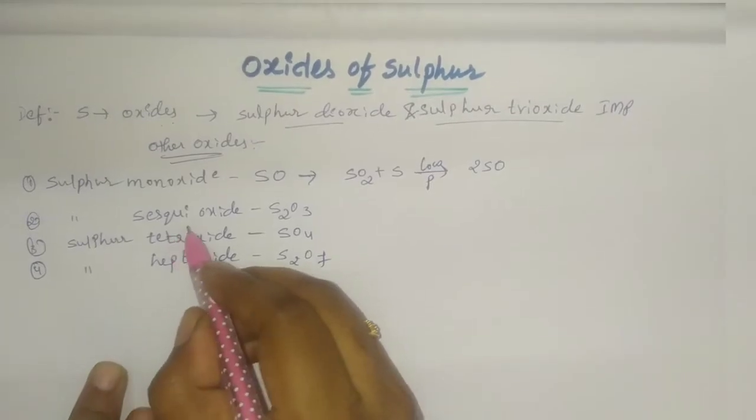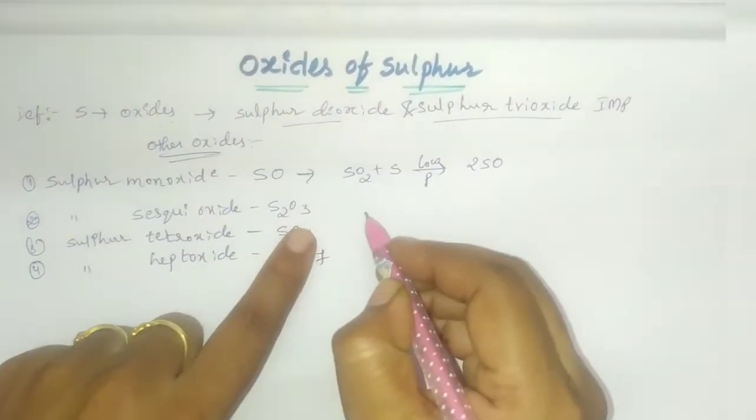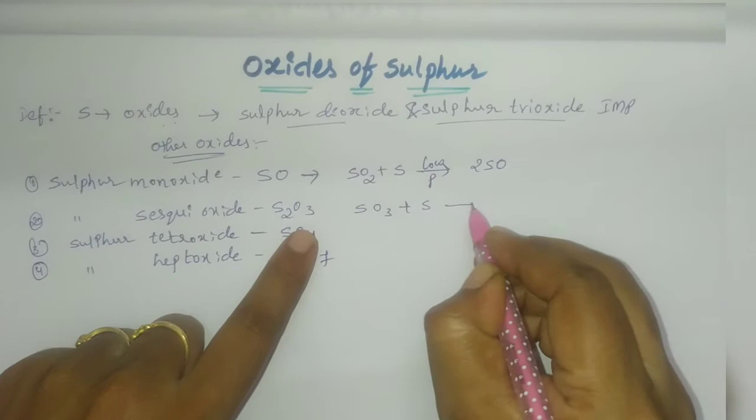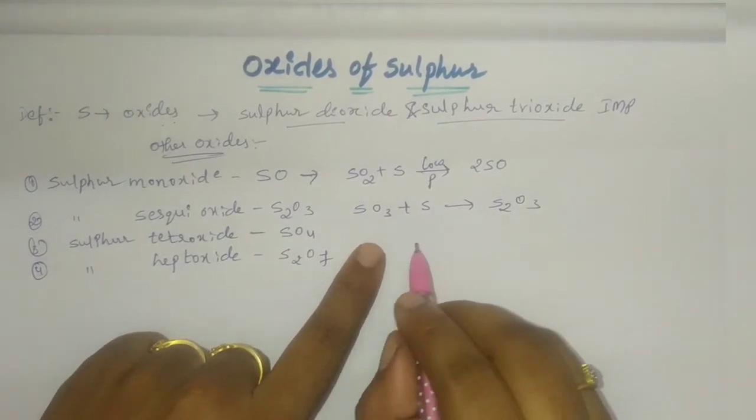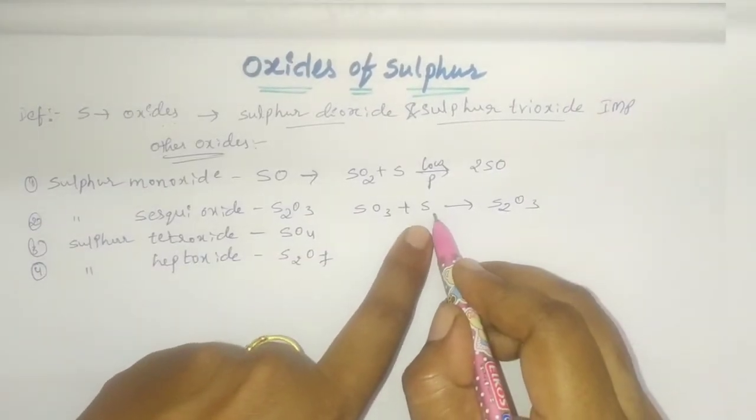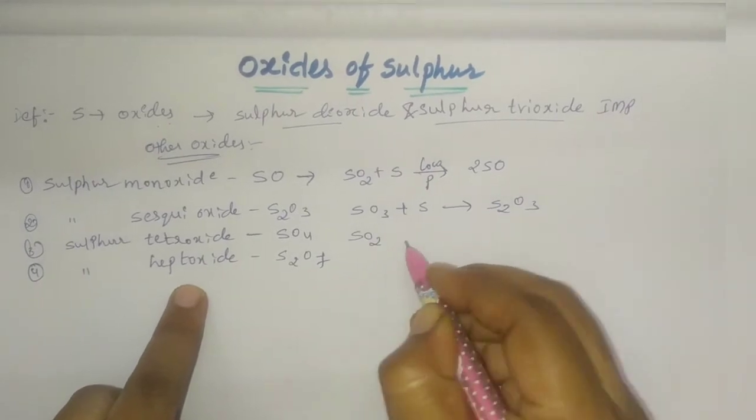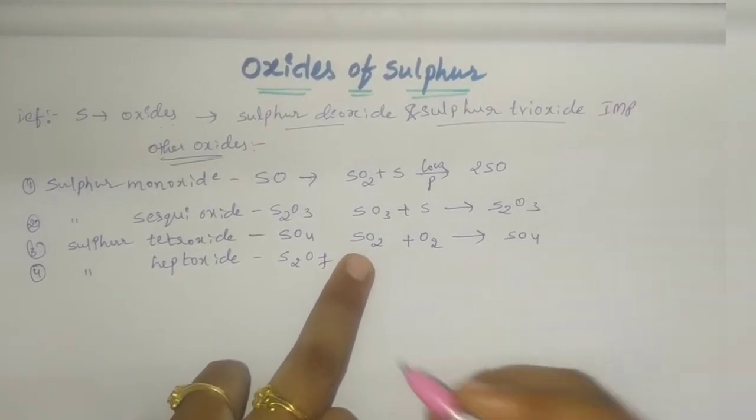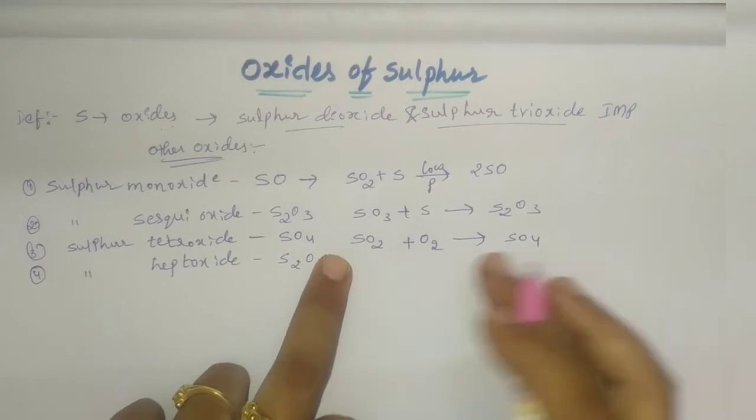Next, sulfur sesquioxide S2O3. Here the reaction is sulfur trioxide directly combined with sulfur to form S2O3. It is a direct combination process. Next, sulfur tetroxide - sulfur dioxide combined with oxygen to form sulfur tetroxide, SO4.